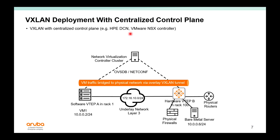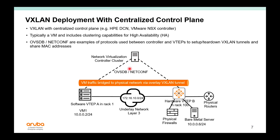In a VXLAN deployment with a centralized control plane, VTEPs are controlled by a centralized controller cluster — examples include HPE Distributed Cloud Networking and VMware NSX. The controllers are typically VMs that cluster together for high availability, ensuring that if one VM fails the controller cluster stays up. OVSDB and NETCONF are protocols used between the controller and the hardware VTEP to set up the VXLAN tunnel and to share MAC addresses so that the software VTEP knows the MAC address of bare metal servers behind a remote VTEP.